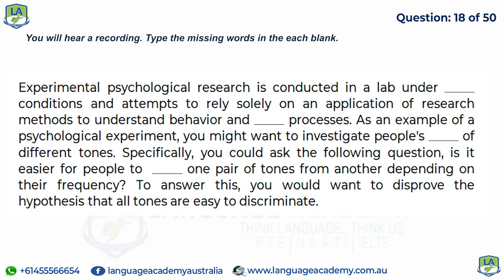Experimental psychological research is conducted in a lab under controlled conditions and attempts to rely solely on research methods to understand behavior and mental processes. As an example, you might want to investigate people's perceptions of different tones — specifically, whether it is easier to discriminate one pair of tones from another depending on their frequency. To answer this, you would want to disprove the hypothesis that all tones are equally easy to discriminate.